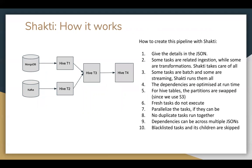The same pipeline, if we have to create with Shakti, we have to give the details in a JSON — like what is the task type, what is the Hive table name, if it is a MongoDB task then what is the name of the MongoDB collection and where is it hosted. Some tasks could be related to ingestion while some could be related to transformation. Shakti will take care of everything. Some tasks could be batched while some could be streaming — Shakti will run them all. The dependencies are optimized at runtime depending upon the freshness of the task as well as freshness of the parent. For Hive tables, we swap the partitions.